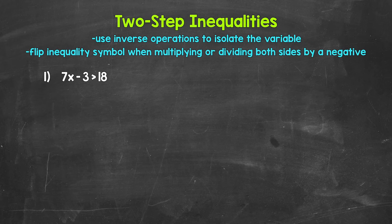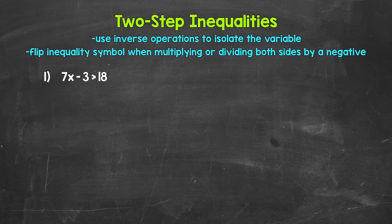When we solve two-step inequalities, we want to isolate the variable — get it by itself on one side of the inequality. We do that by using inverse operations, so this is very similar to solving two-step equations. If you can solve an equation, you can solve an inequality. One thing to be aware of when it comes to inequalities: we flip the inequality symbol when multiplying or dividing both sides by a negative.